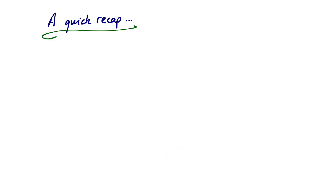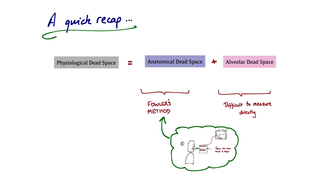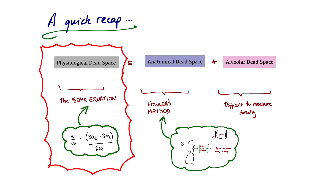To briefly recap: the physiological dead space, which is the total amount of dead space, equals the anatomical dead space — the volumes of airways with no respiratory epithelium — plus the alveolar dead space, which is the volume of alveoli that are ventilated but not perfused. The alveolar dead space is hard to measure directly. The anatomical dead space can be measured using Fowler's method, discussed in another video. It is the physiological dead space — the total amount — that is calculated using the Bohr equation, and this is the focus of this video.